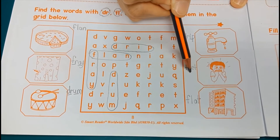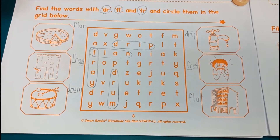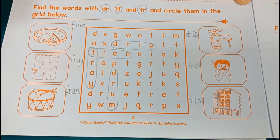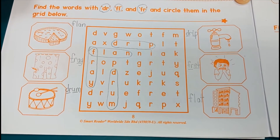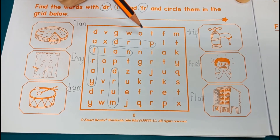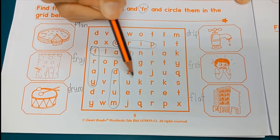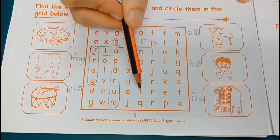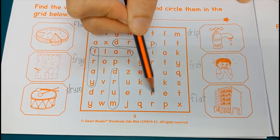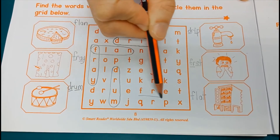Next, F-R-E-T, fret. Fret means you're worried or you're scared. So let's find F - where is F? It's here. F-R-E-T, fret. Circle it.